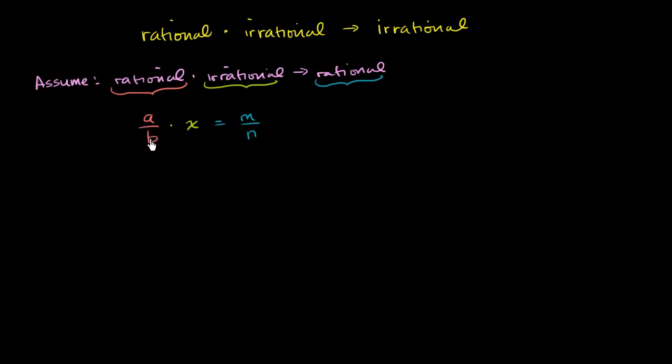So I'm assuming that a rational number, which can be expressed as a ratio of two integers, times an irrational number can get me another rational number. So let's see if we can set up some form of contradiction here.